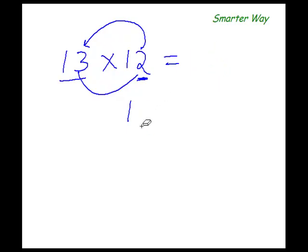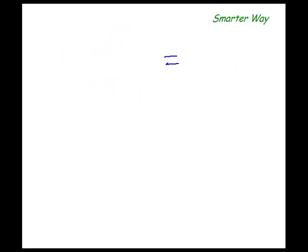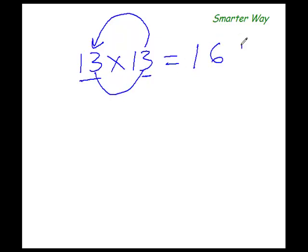So let's take one more example and this time you try to solve it. What is 13 times 13? So first thing you did was to add this 3 to this entire number. 13 plus 3 is 16, and 3 times 3 is 9, so the answer is 169.